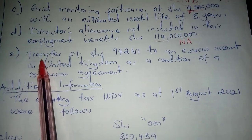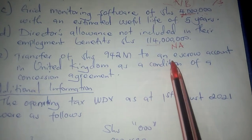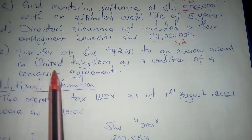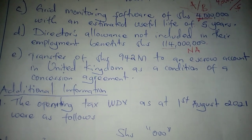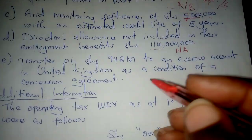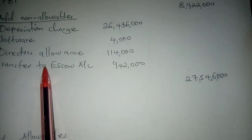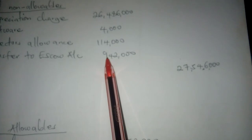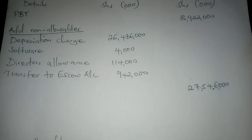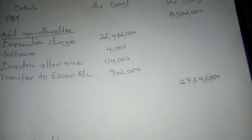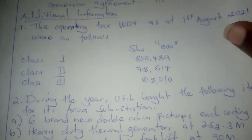Another item included is a transfer of 942 million to an escrow account in the United States as a condition for a concession agreement. Transfers are taxed, so it is non-allowable. Under non-allowables, we write 'transfer to escrow account' at 942 million.